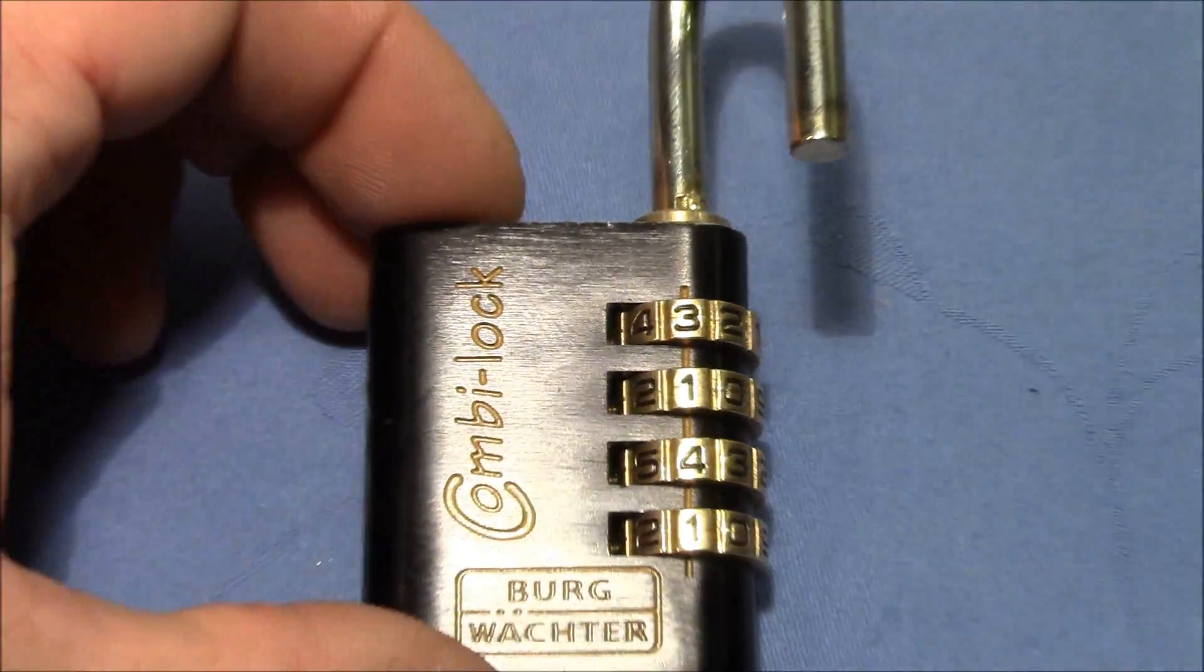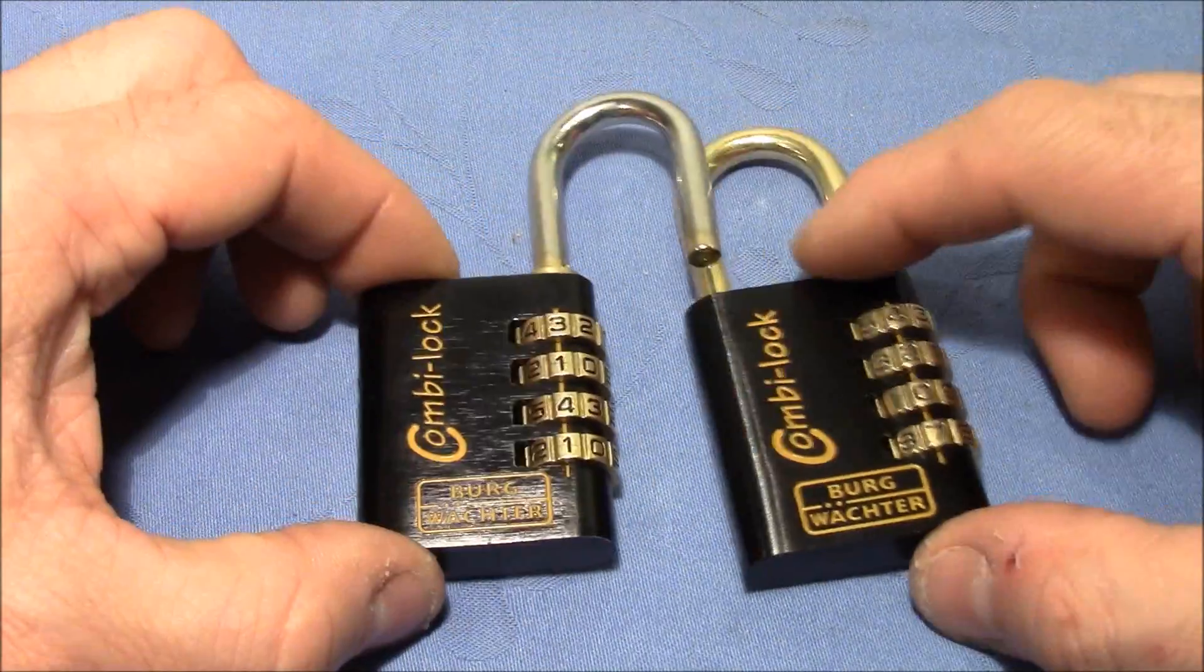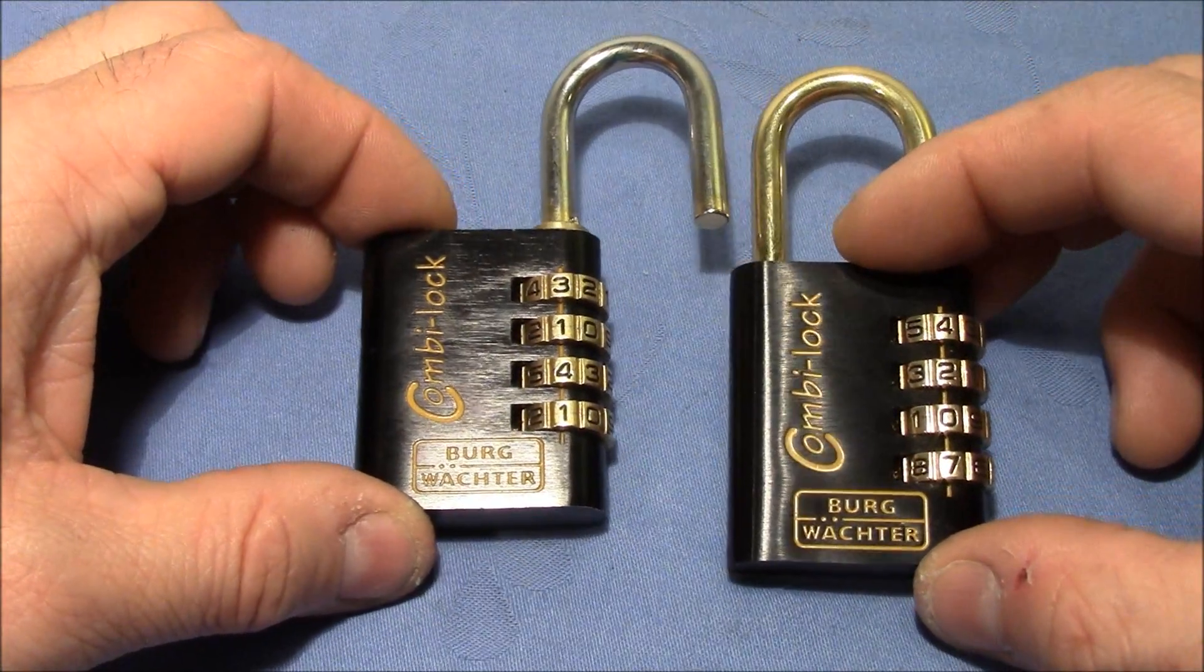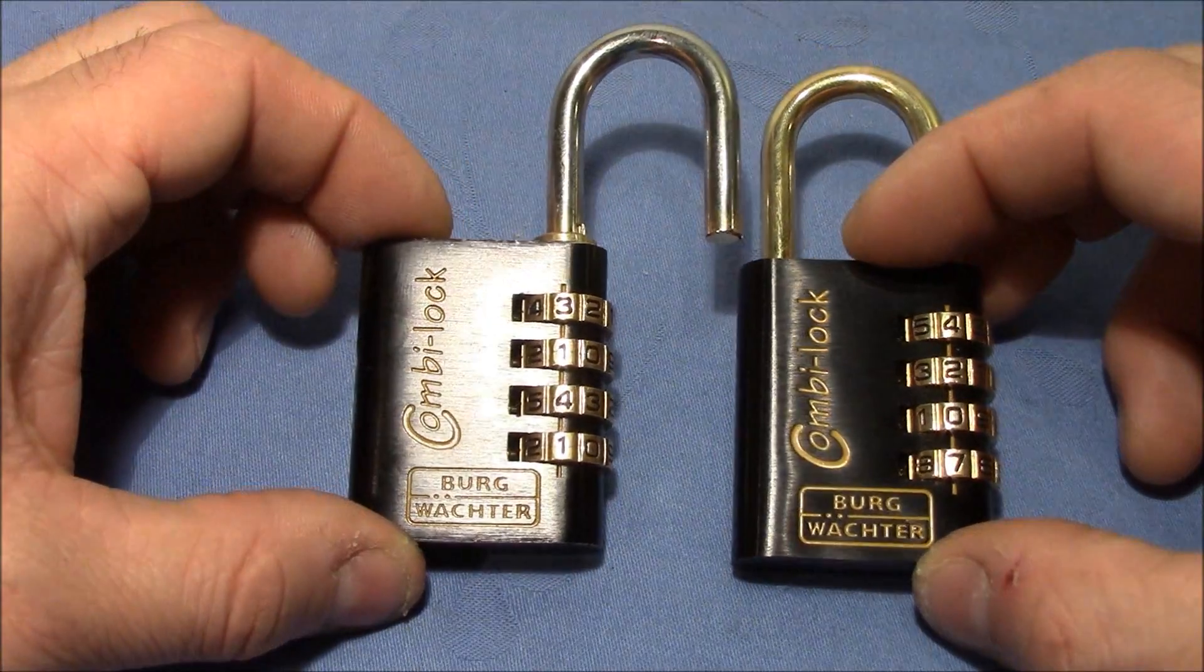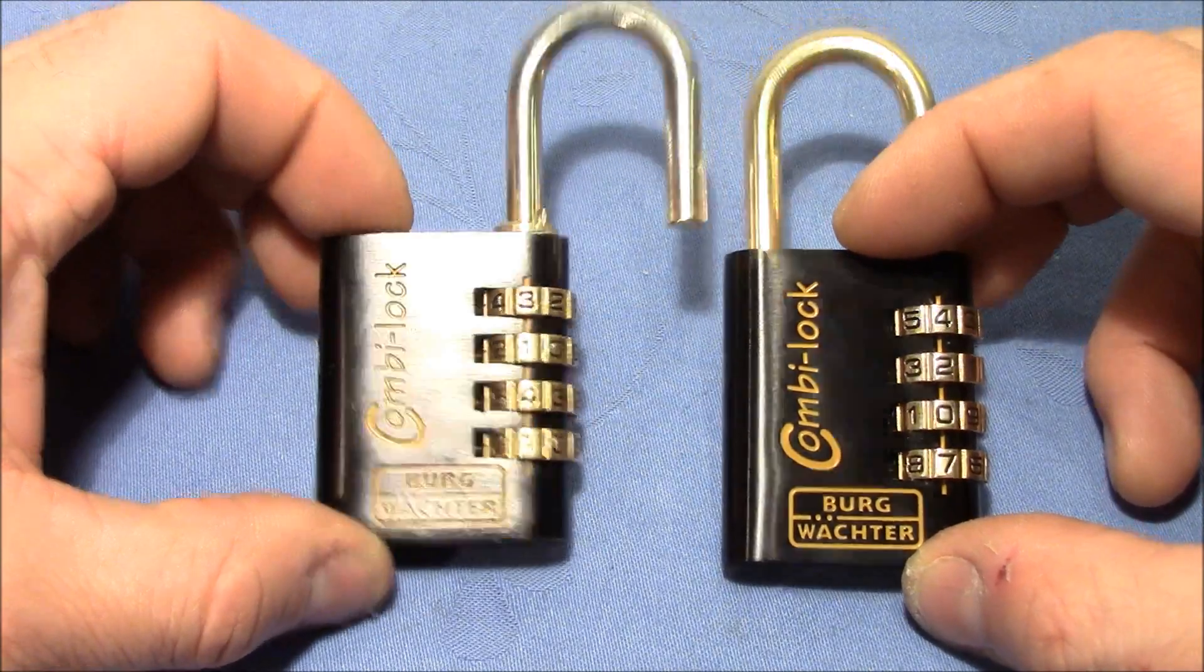Alright, so we're done. That was dissecting and decoding of the CombiLock from Burgwächter, a four-wheel combination padlock with four gates. I hope you have enjoyed this video. Thanks for watching. Happy picking and decoding. Cheers and bye-bye.